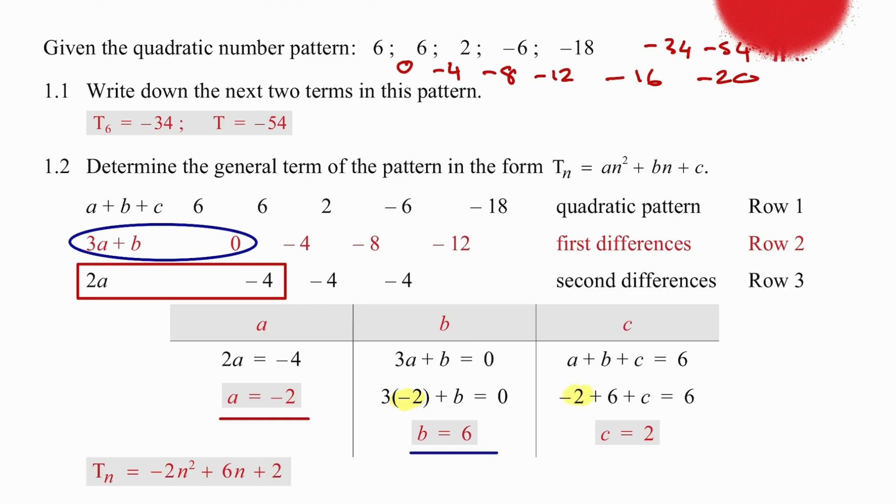Now we are going to take the a value of minus 2 and the b value of 6, and make use of the fact that a plus b plus c has a value of 6 to work out that c is equal to 2. So we've been able to work out our formula by substituting a, b, and c. The nth term is given by minus 2n squared plus 6n plus 2.